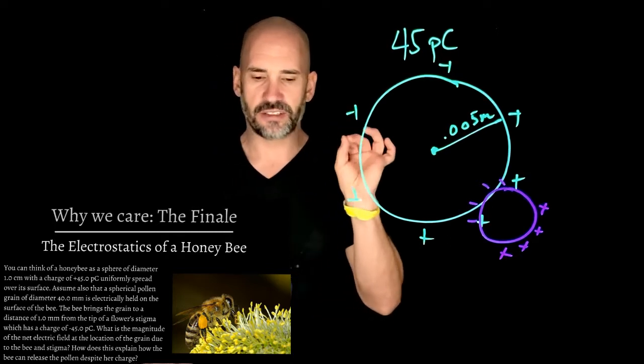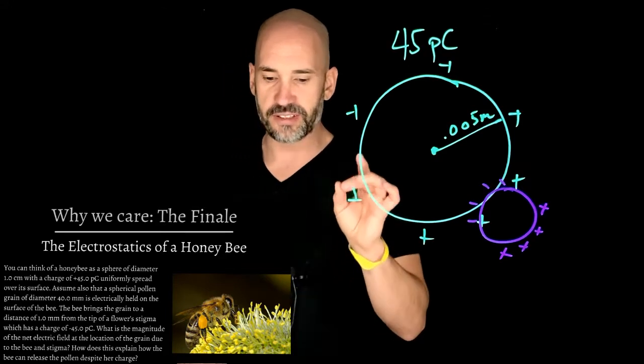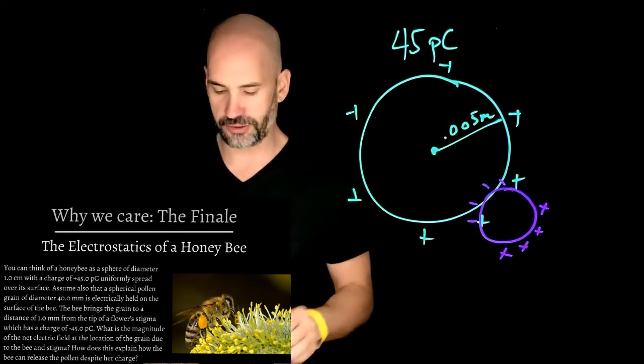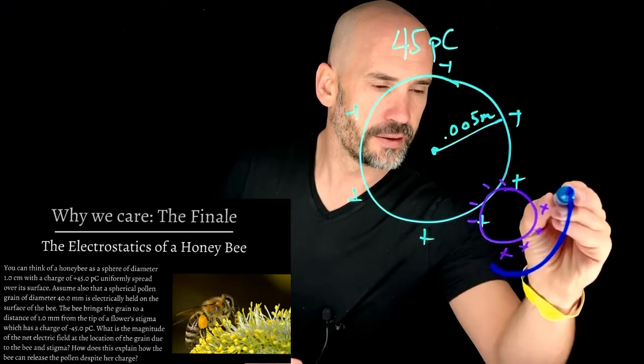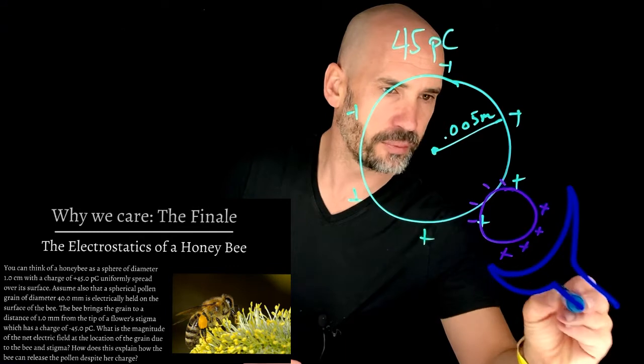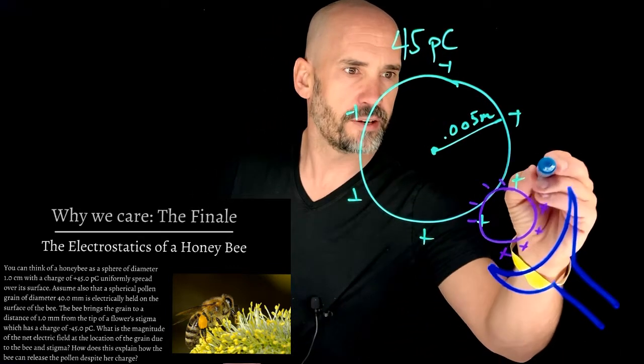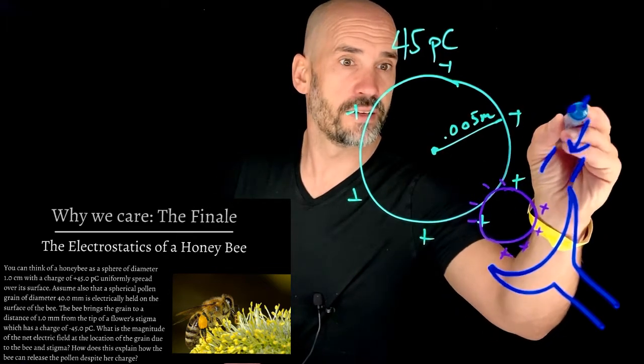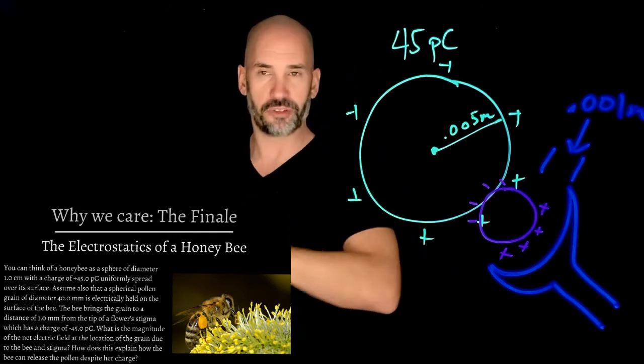But life changes a little bit when we bring it close to the stigma of the flower. So the bee brings the grain to a distance of one millimeter from the tip of a flower's stigma. Okay. So I'm going to try to draw the stigma, and it's even closer. So let's say this is the stigma.